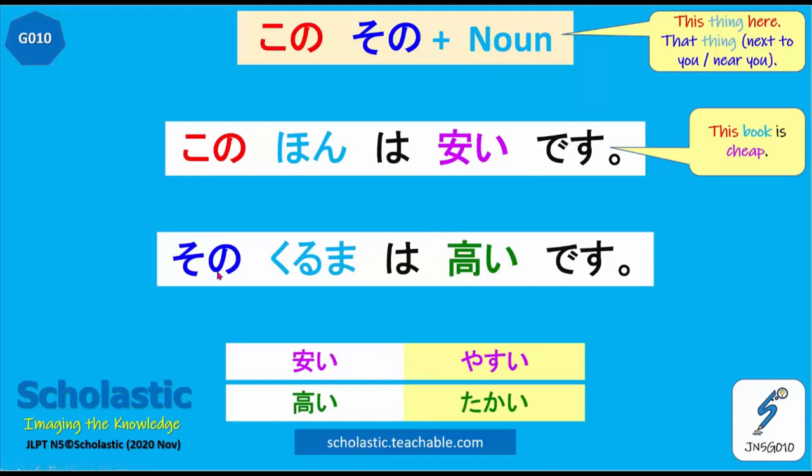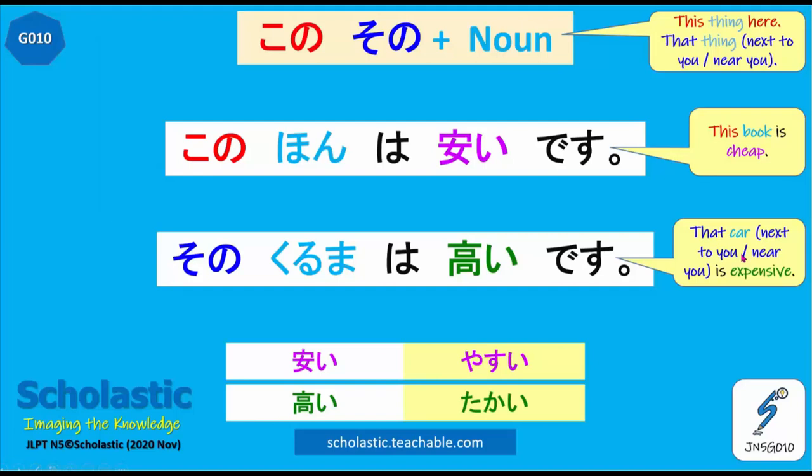Similarly, sono kuruma wa takai desu. Takai means expensive. So that means that car next to you, near you, is expensive. That car near you is expensive.